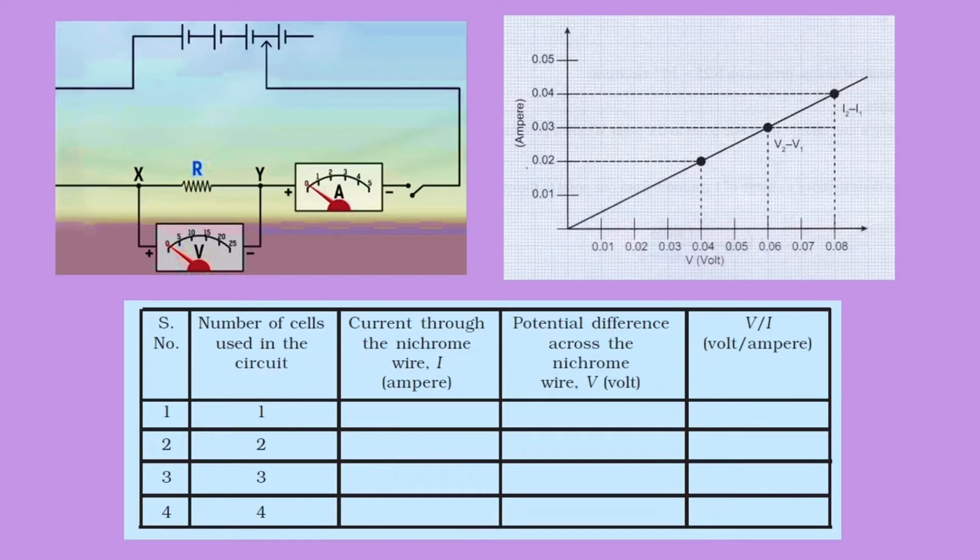So what did he notice? He found that whenever the potential difference is varied, whenever the number of cells are increased, when the potential difference is increased, accordingly the current is also increased. So both are directly proportional. When this is being plotted by a graph, it gives a straight line from the origin and that type of graph is called an ohmic graph. Can you see the ohmic graph at this moment children? Yes? Fine.